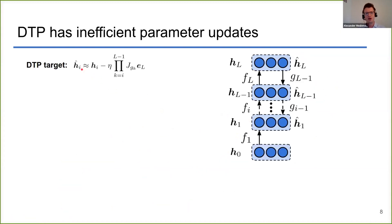If we take a closer look by also doing a Taylor approximation of the targets in difference target propagation, you see the Jacobians of all the feedback mappings appearing here. If we compare that with the ideal Gauss-Newton targets that we introduced before, we see that this equality should hold for the DTP targets to be approximately equal to the Gauss-Newton targets.